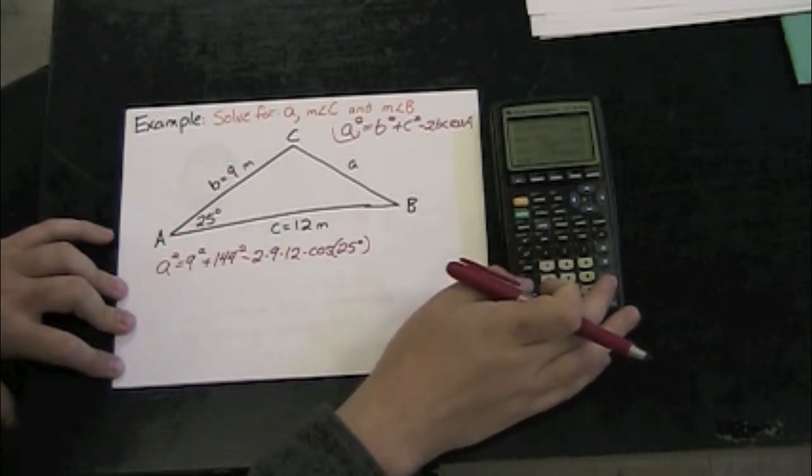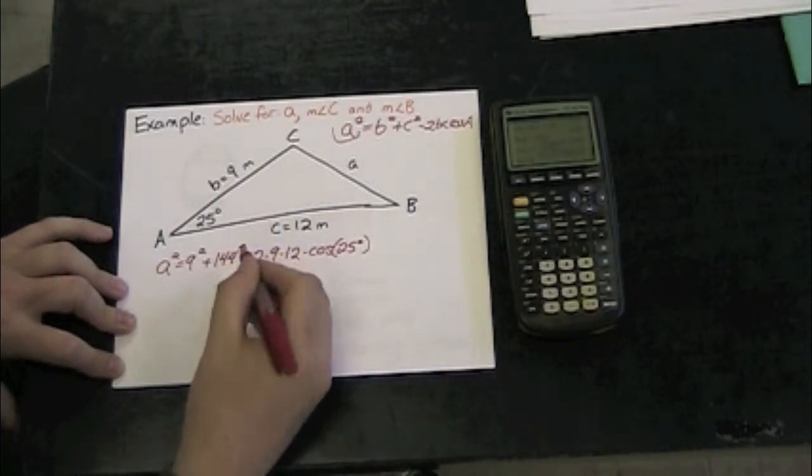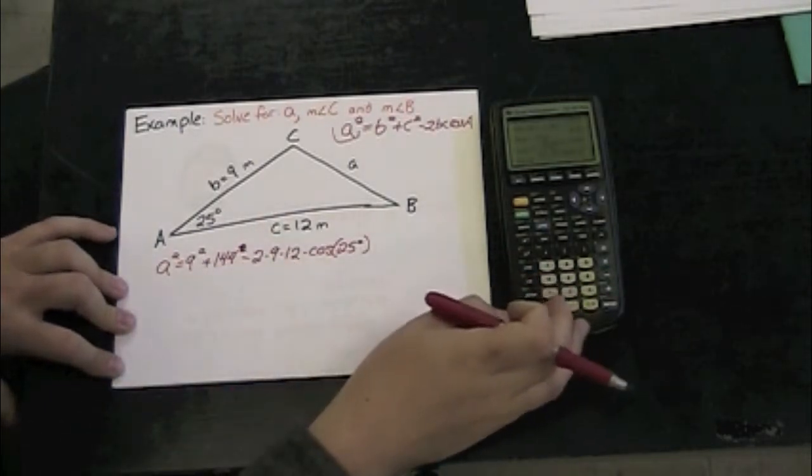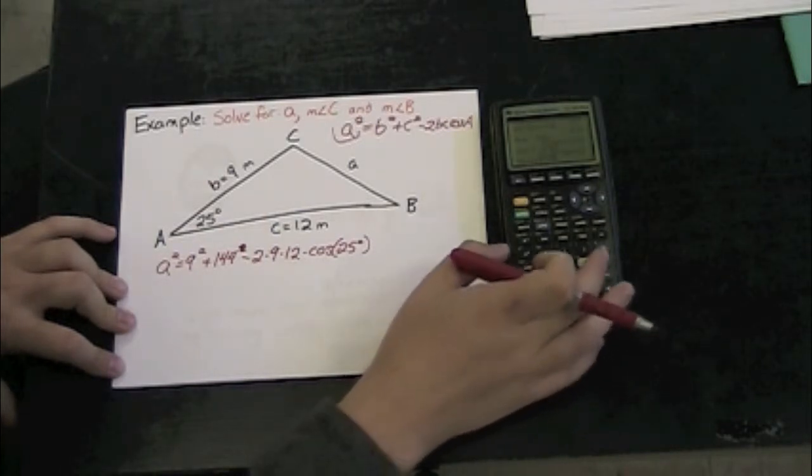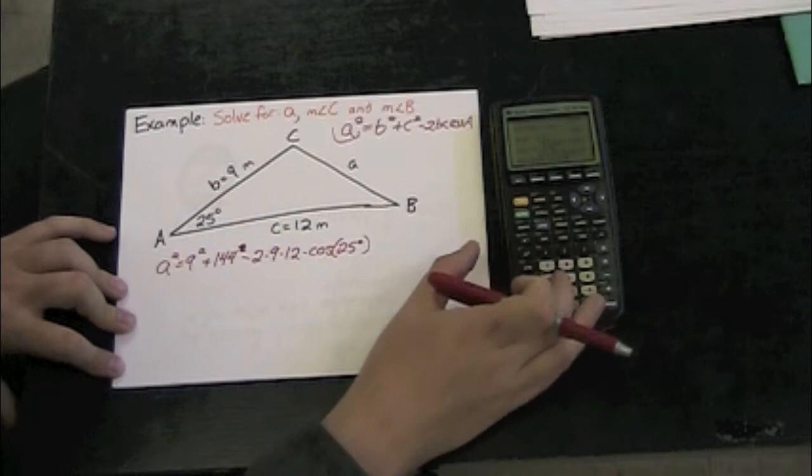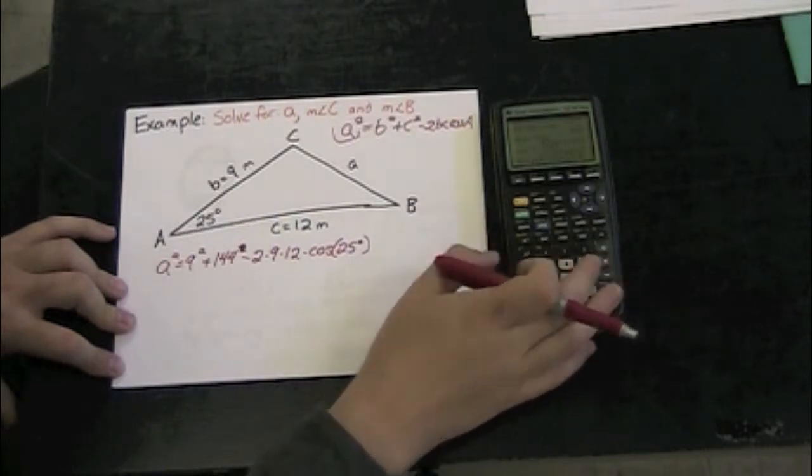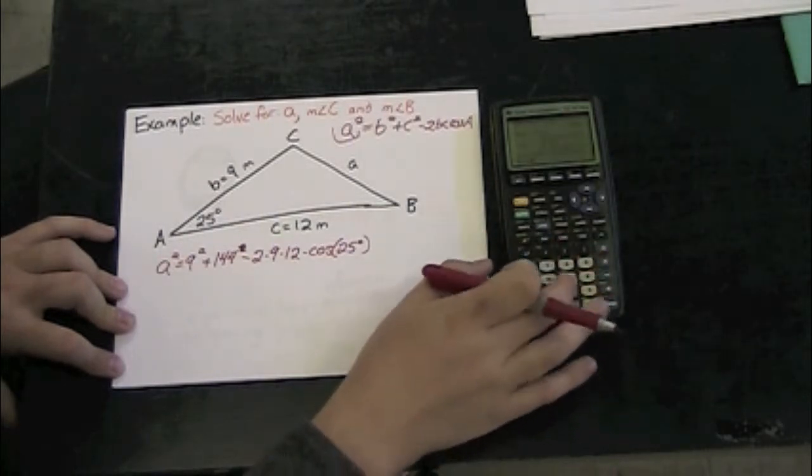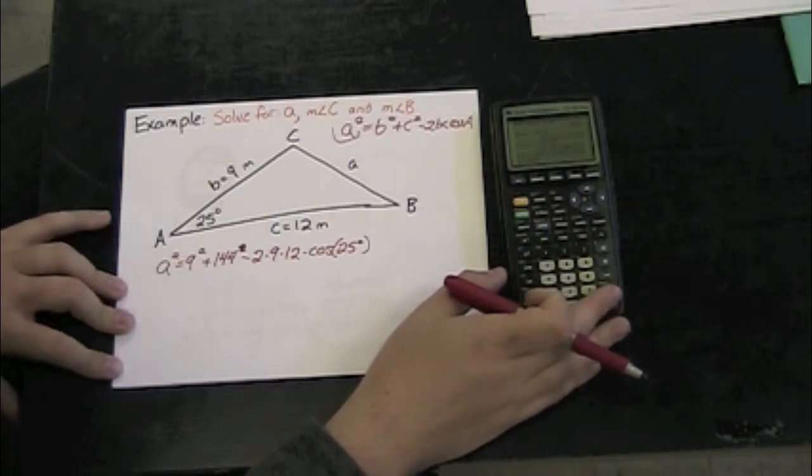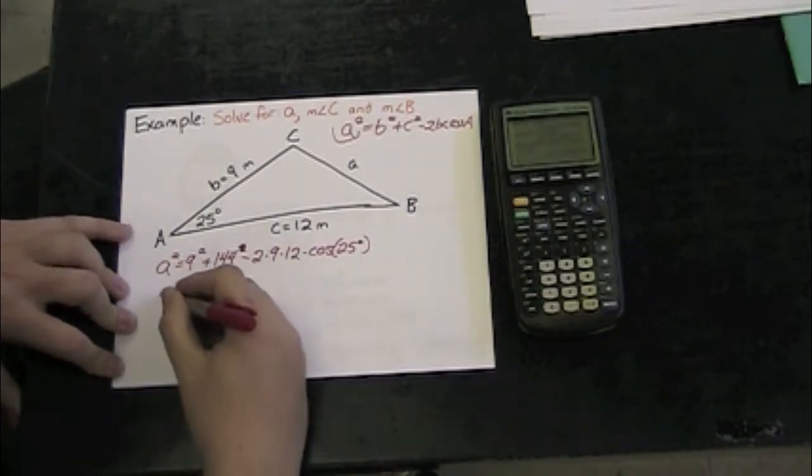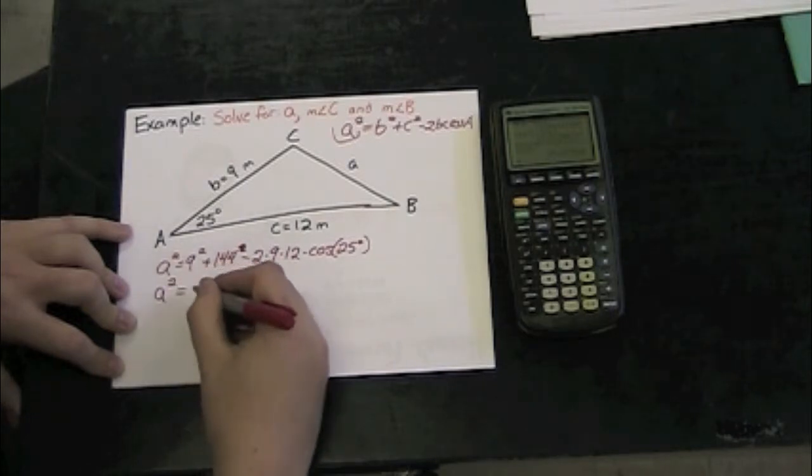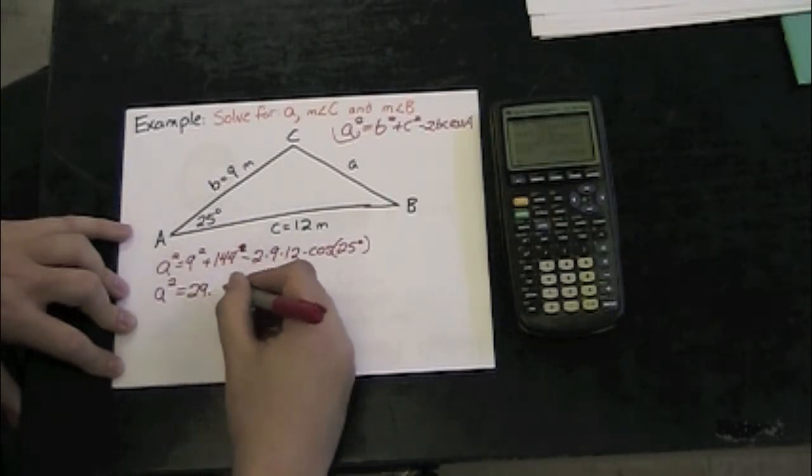If I begin to evaluate this, 81, 12² is 144, plus 144 minus 2 times 9 times 12 times cosine 25. Again, making sure that your calculator mode is set to degrees. And I've got A² = 29.238.